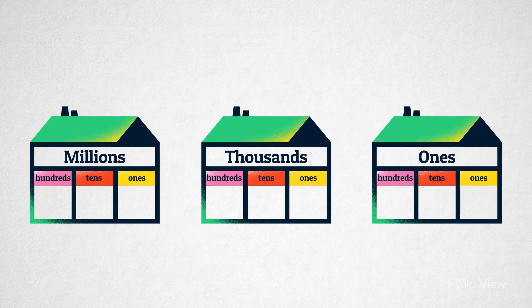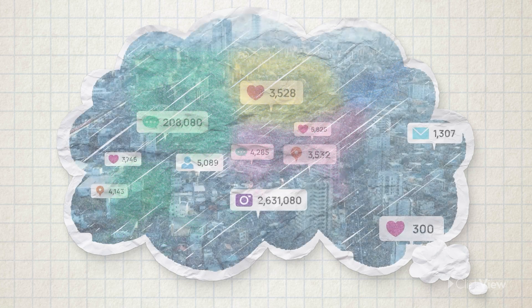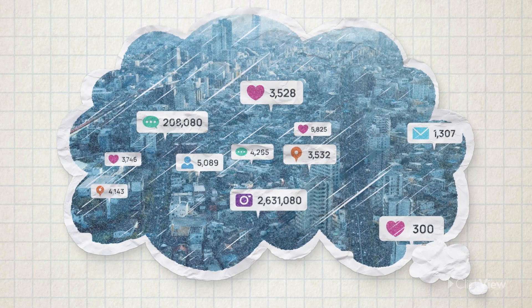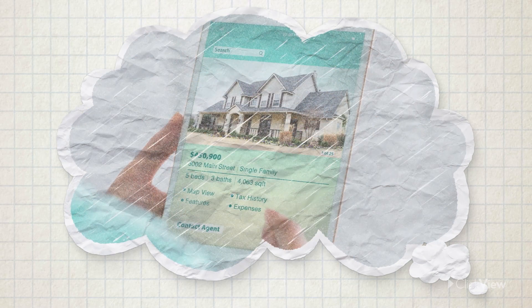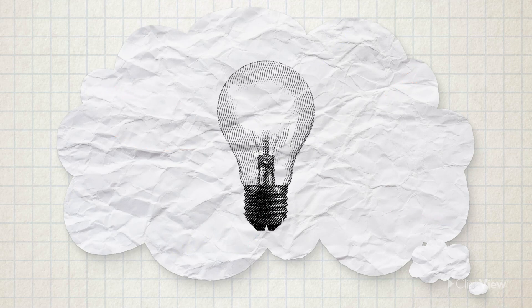This pattern continues all through the place value system, and you can use it to read and write large numbers easily — even really huge numbers! It's a simple, elegant, and efficient system, and it's a really important part of our lives. So, are you ready to try using the place value houses to make sense of some large numbers in your life?